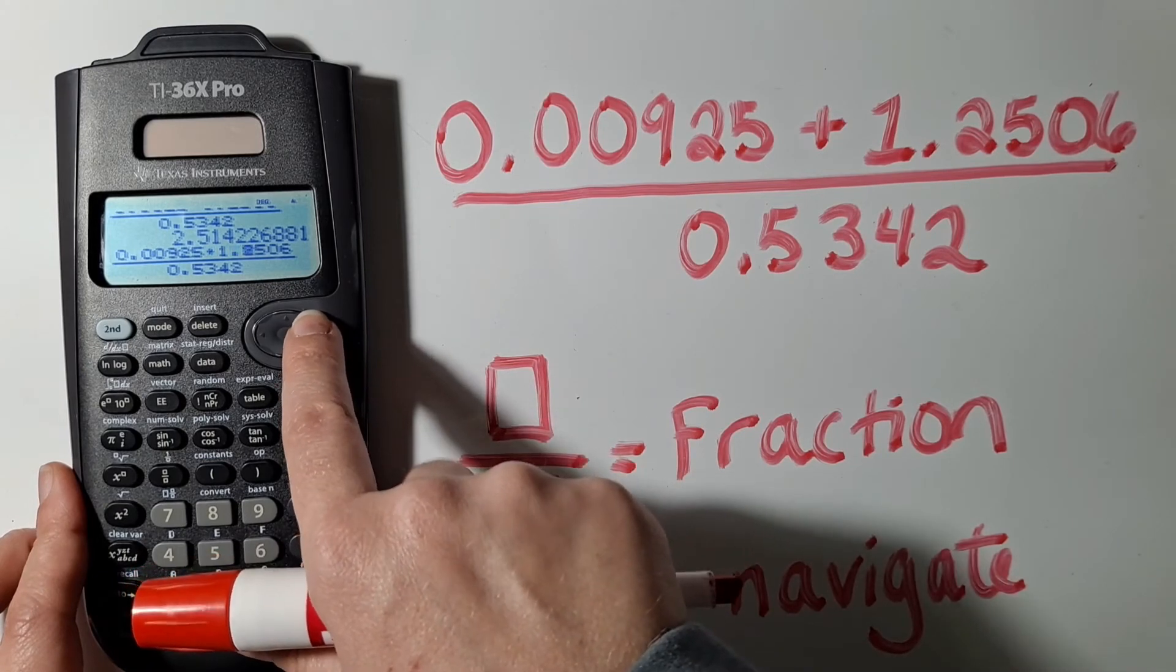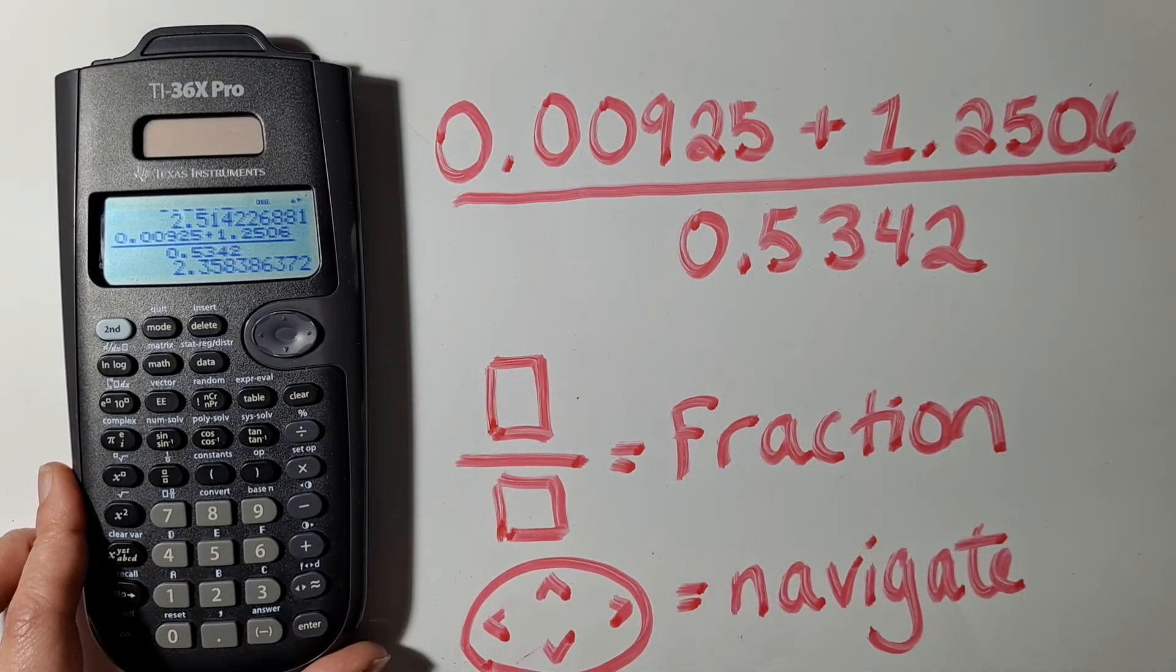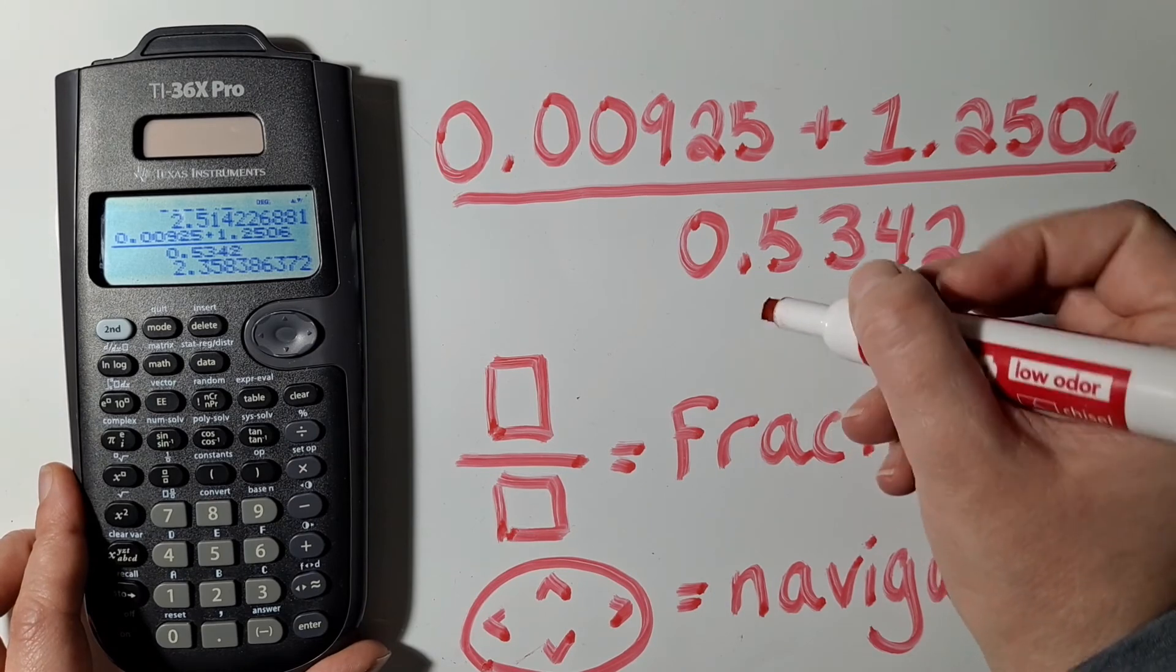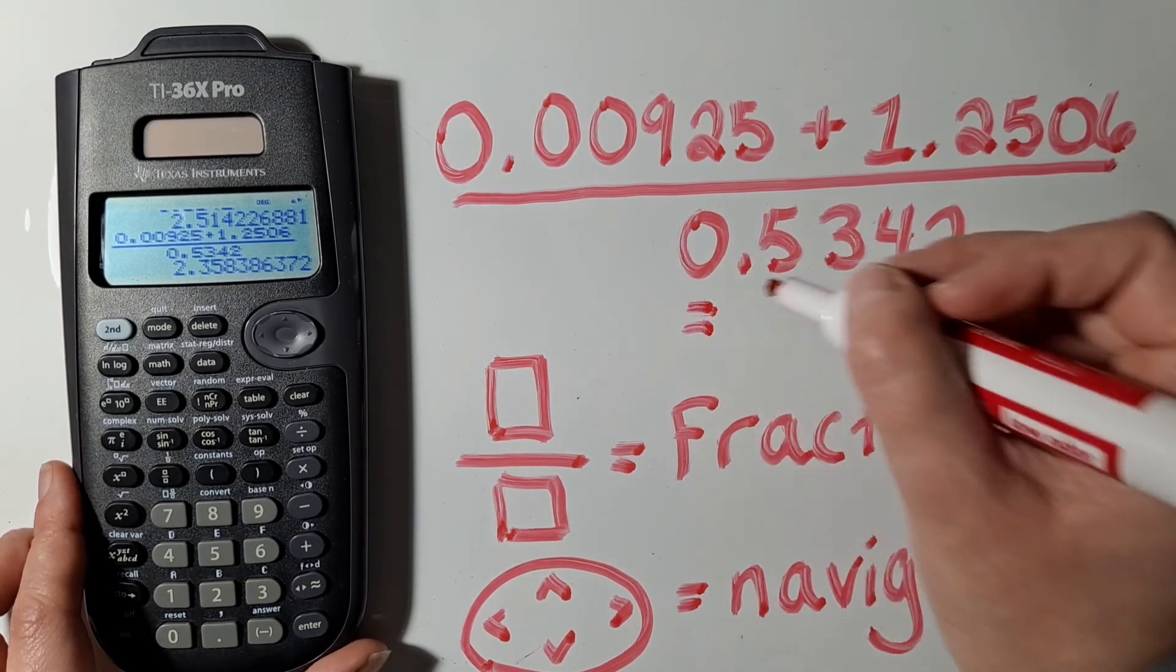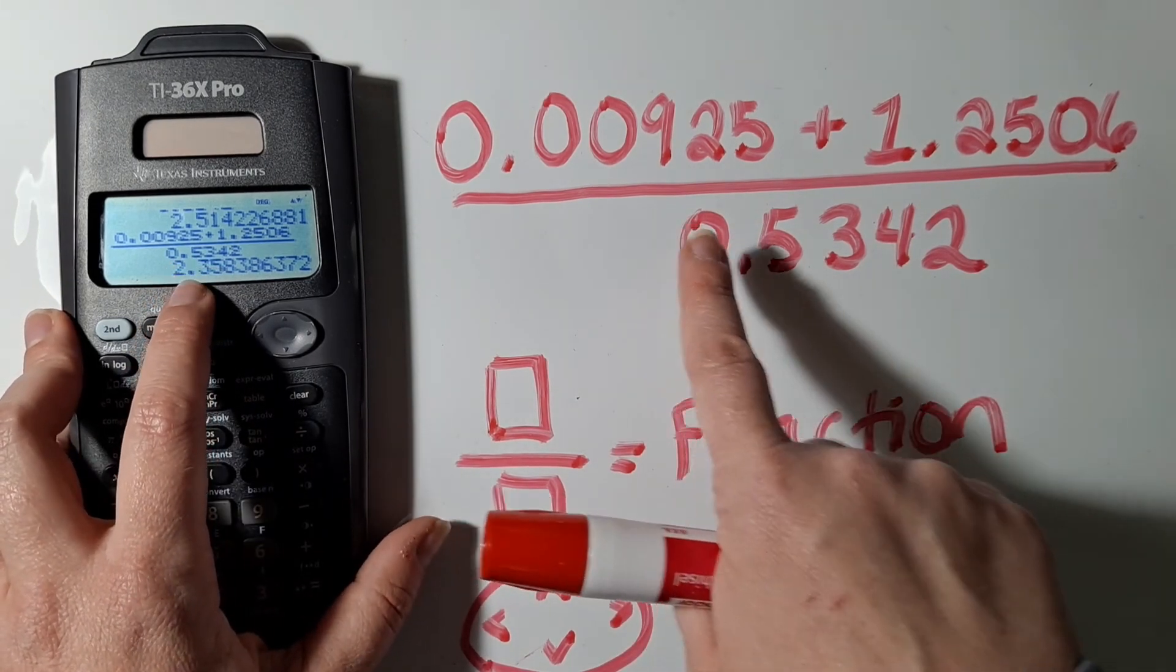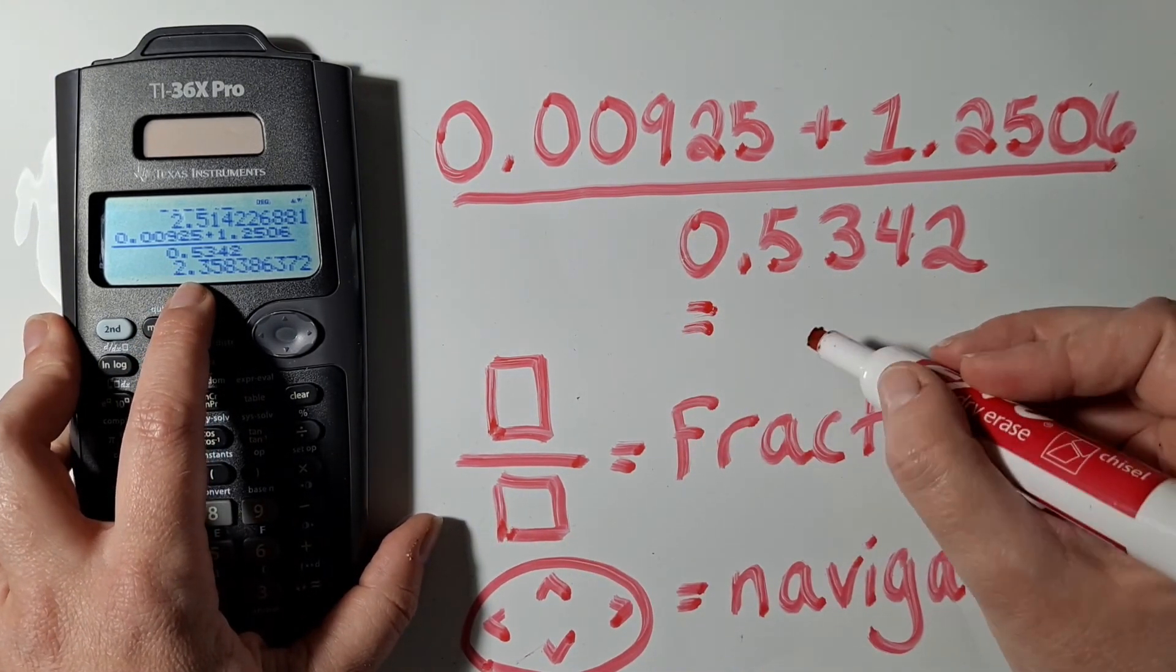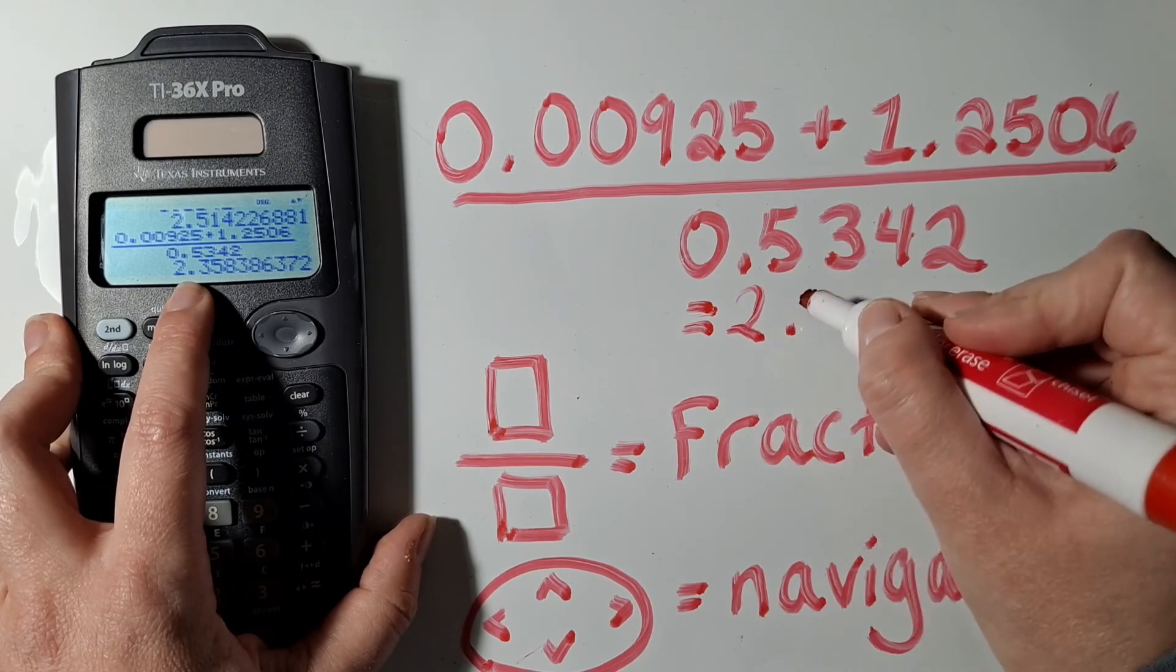If you don't do an Insert, then you end up retyping over digits that you have already typed. Now we can verify that what I typed in matches what I intended to type in, and so now I can type in my answer.